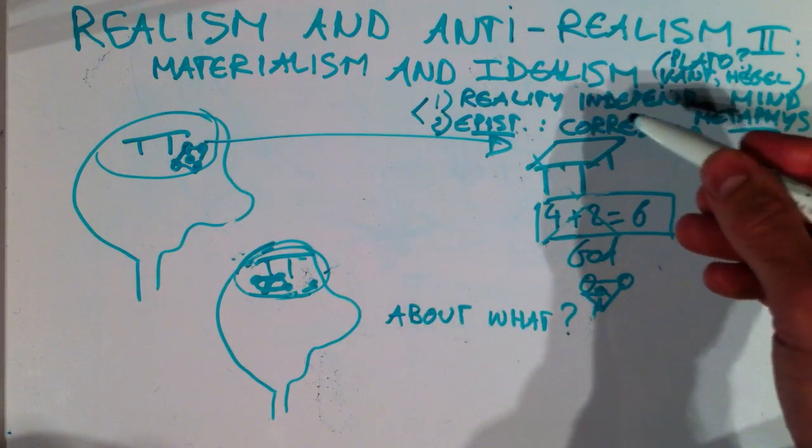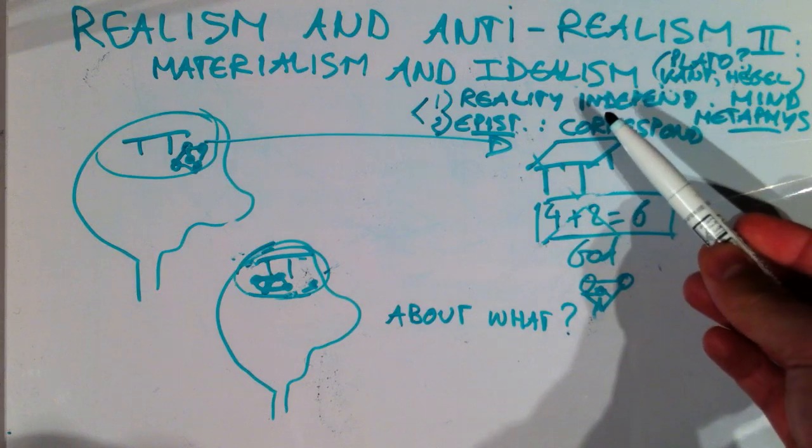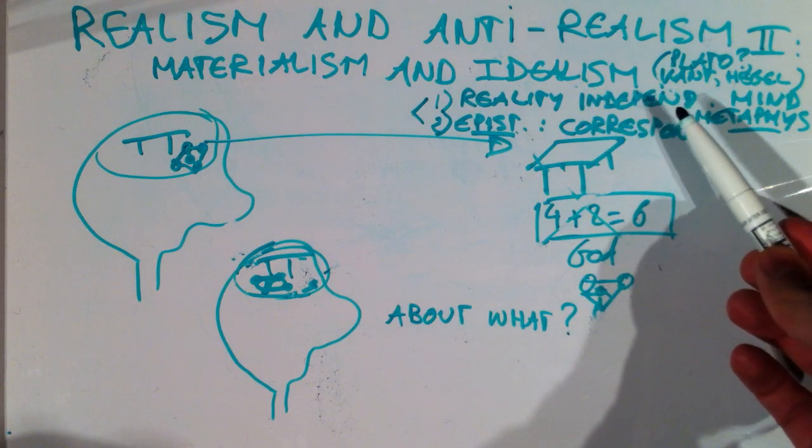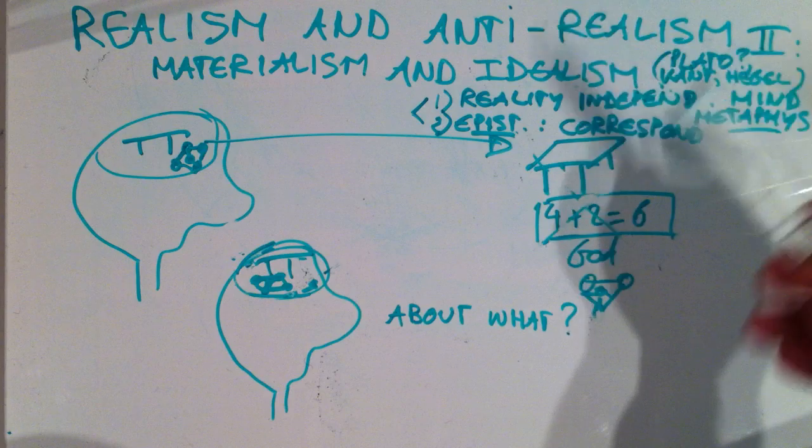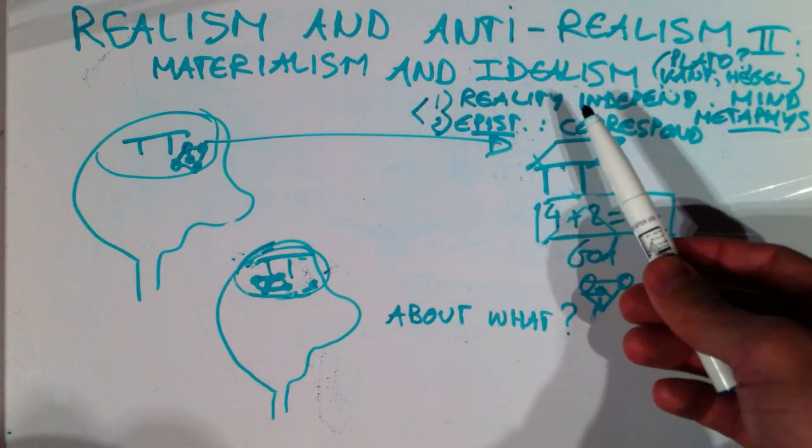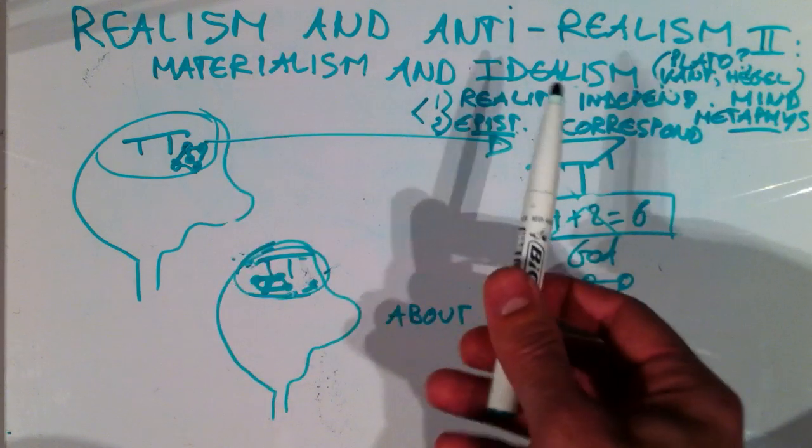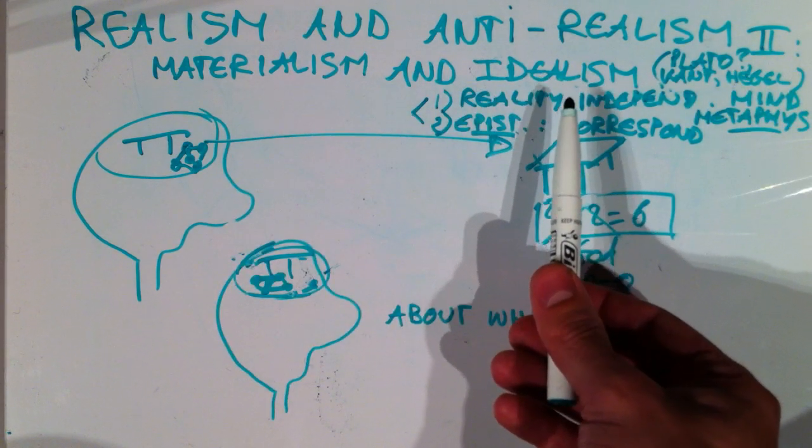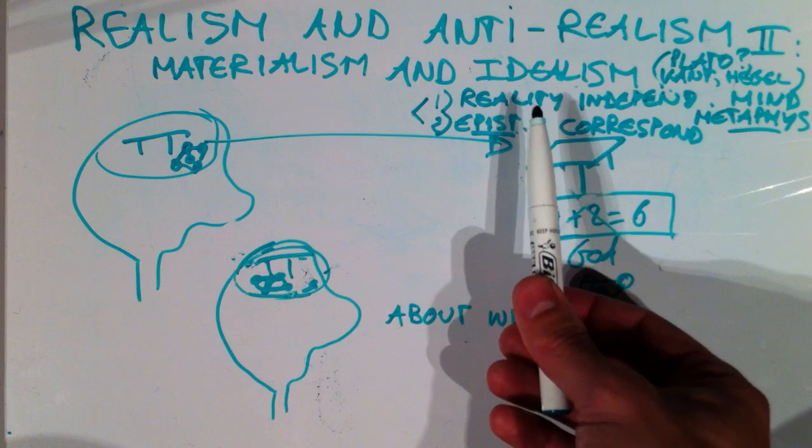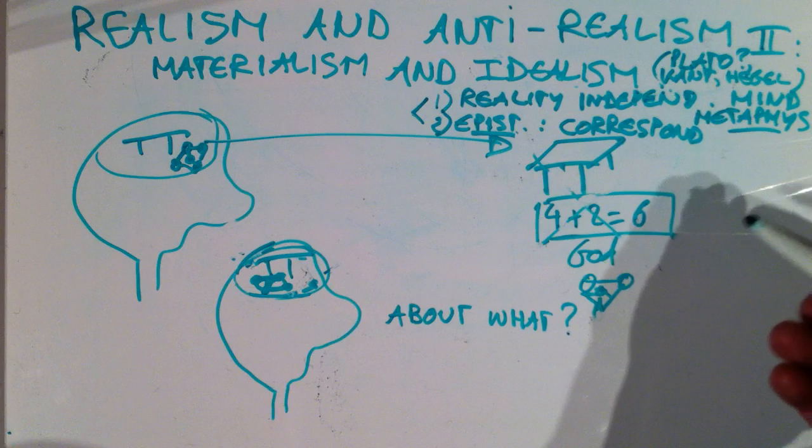But you can also wonder about stuff in general. Is there really stuff that exists independently of our mind, be it tables, be it God, whatever? Is there just any reality which exists independently of our mind? And the idealism debate is really about this general issue. Is there such a thing as reality which exists outside our mind?